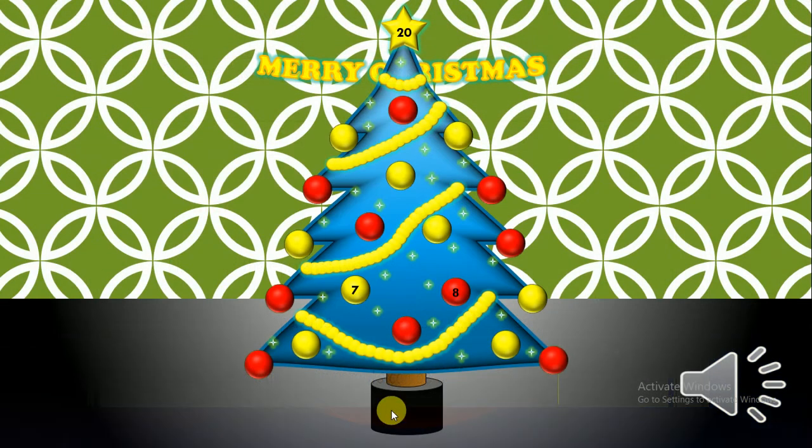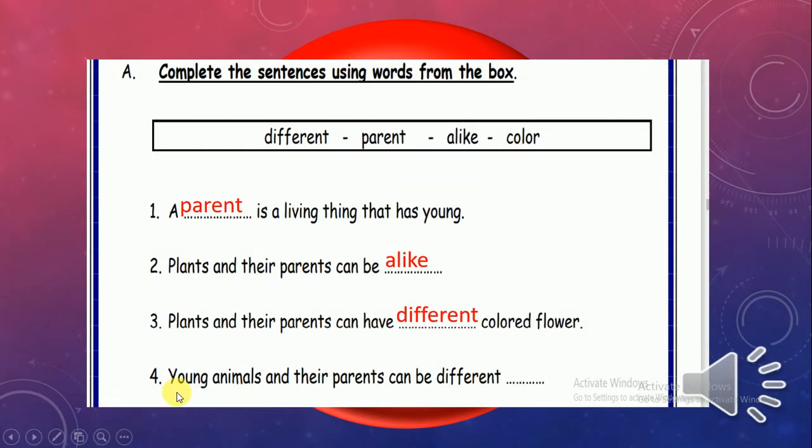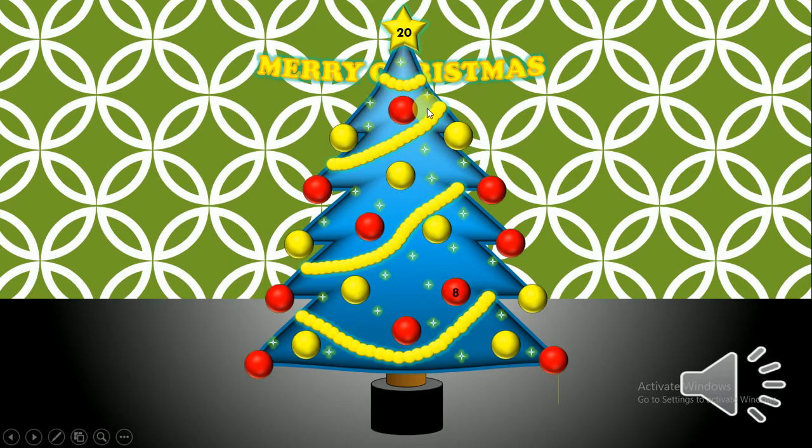Let's back again to number 8. Okay, last one. Young animals and their parents can be different color. Good job. Okay, we just have number 20.